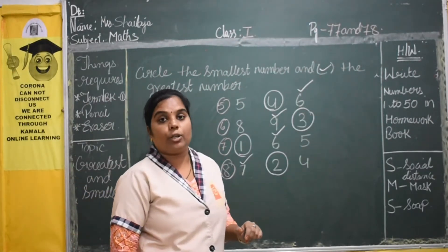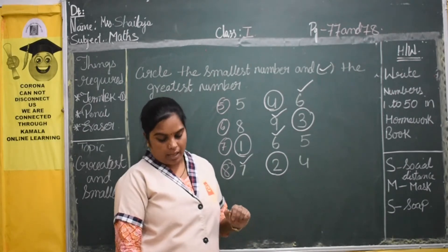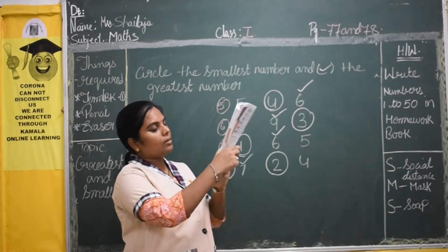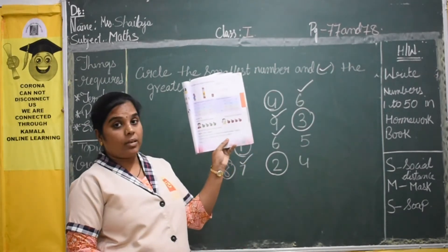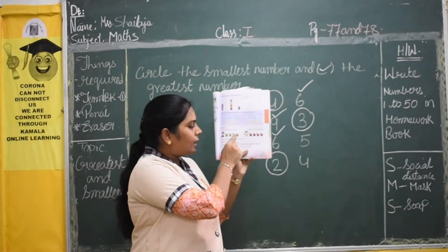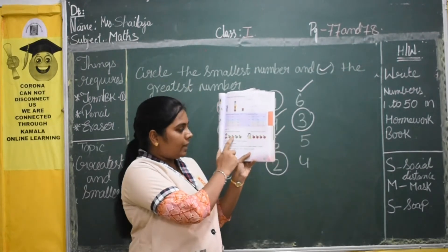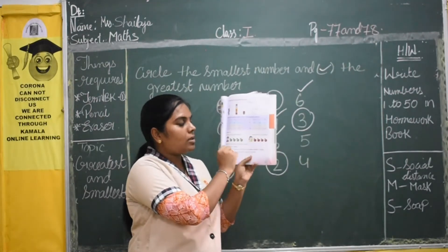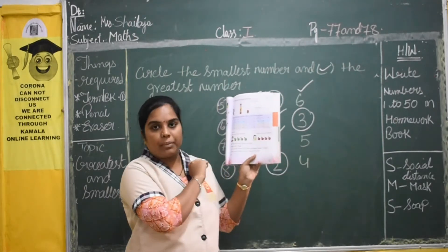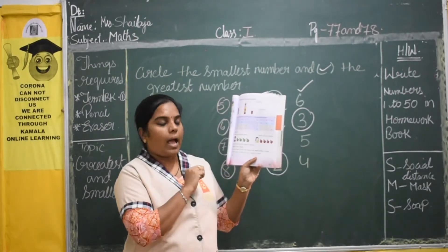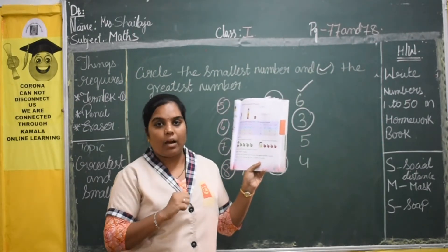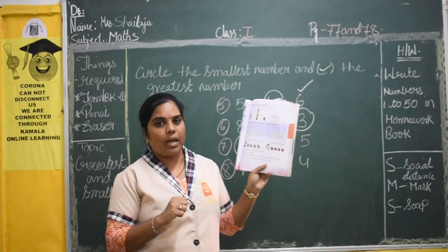Now next is equal. Here, look at this textbook. Chetan has 4 green apples. Here you find green apples — the apples are in green color. And here Ramya has 4 red apples. So Chetan and Ramya both have the same number of apples.